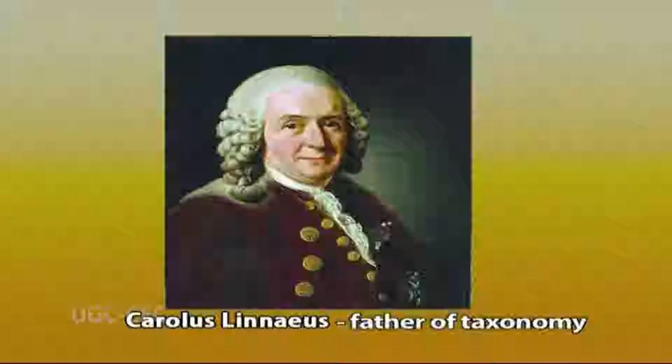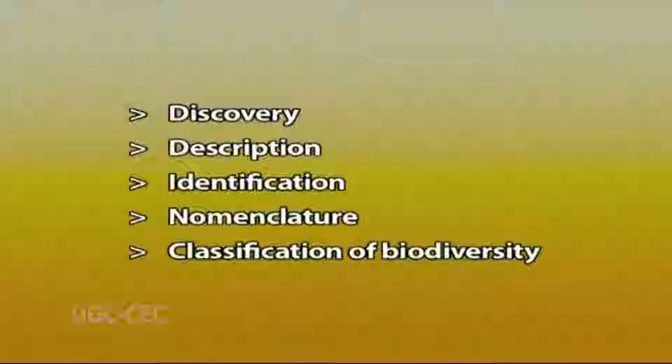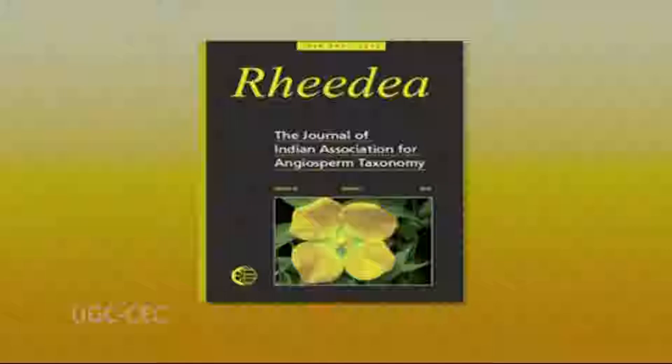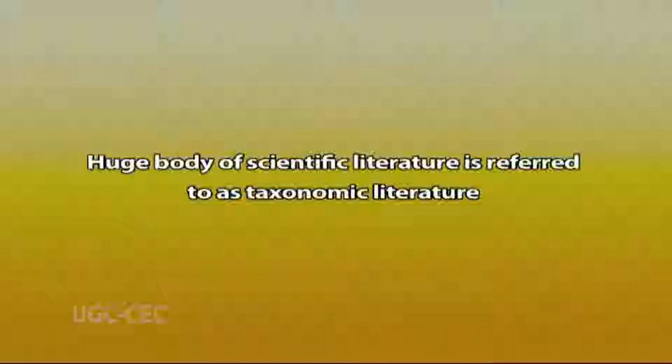Since the time of Carolus Linnaeus, who is regarded as the father of taxonomy, a lot of scientific literature has been published dealing with discovery, description, identification, nomenclature, and classification of biodiversity. Such a huge scientific literature, published in books, floras, journals, or even in the form of indexes, is an essential tool for the advancement of theory and practice of taxonomy. This huge body of literature is referred to as taxonomic literature.